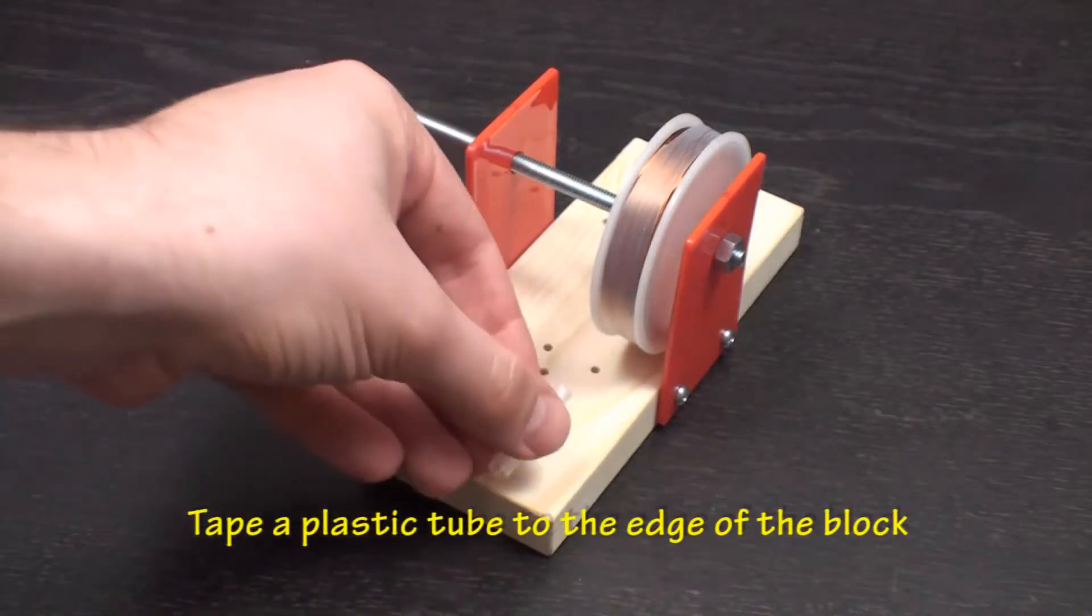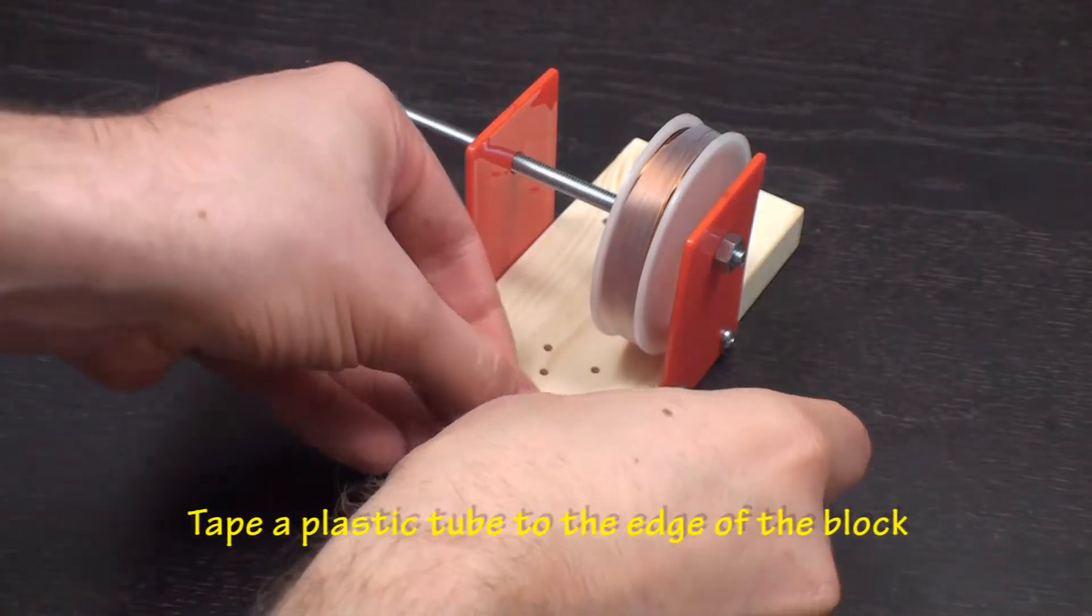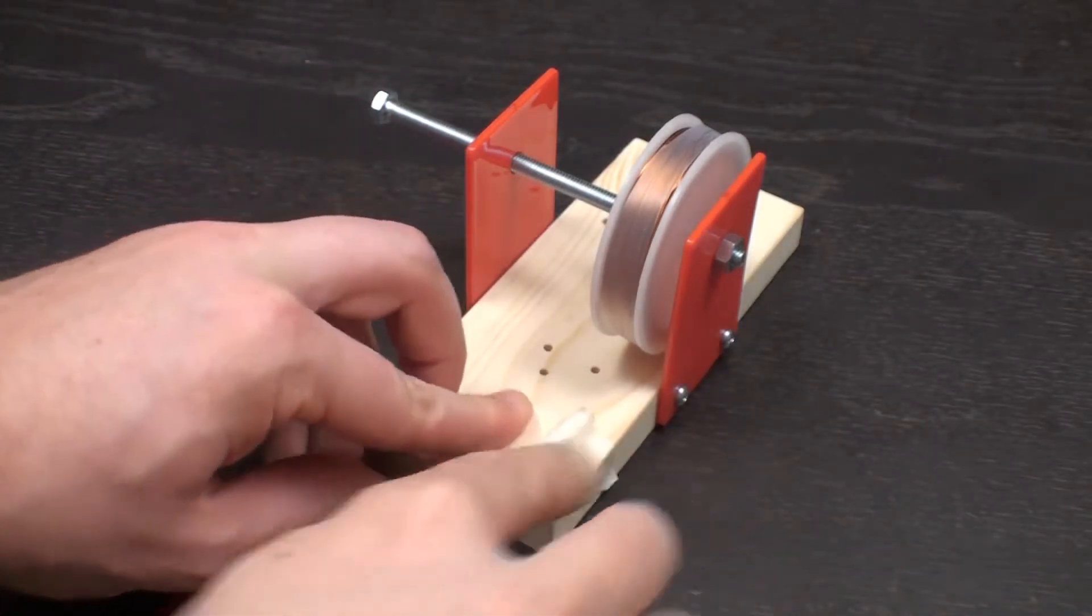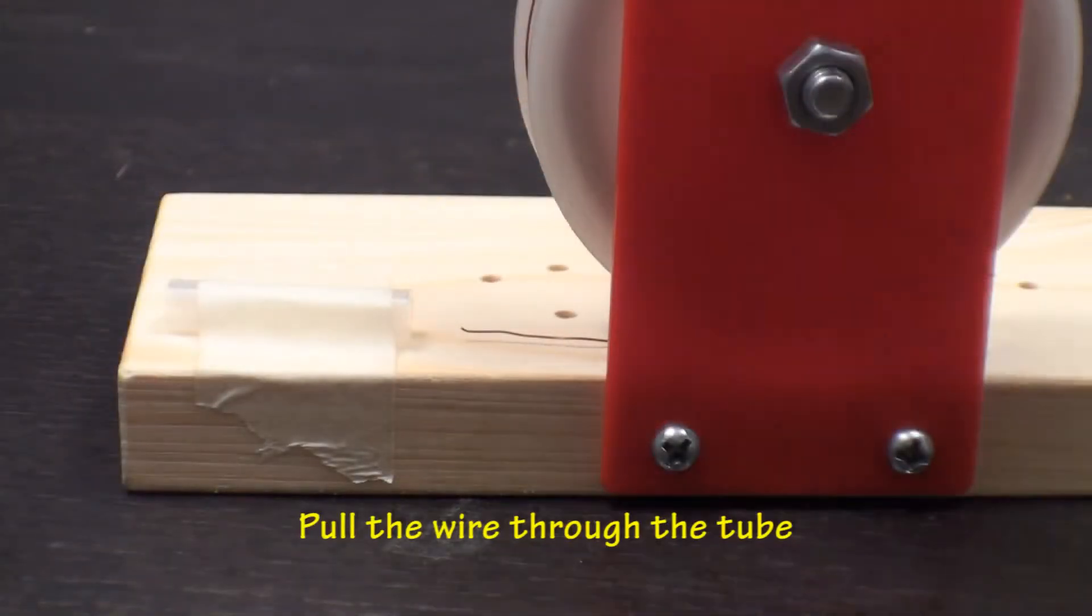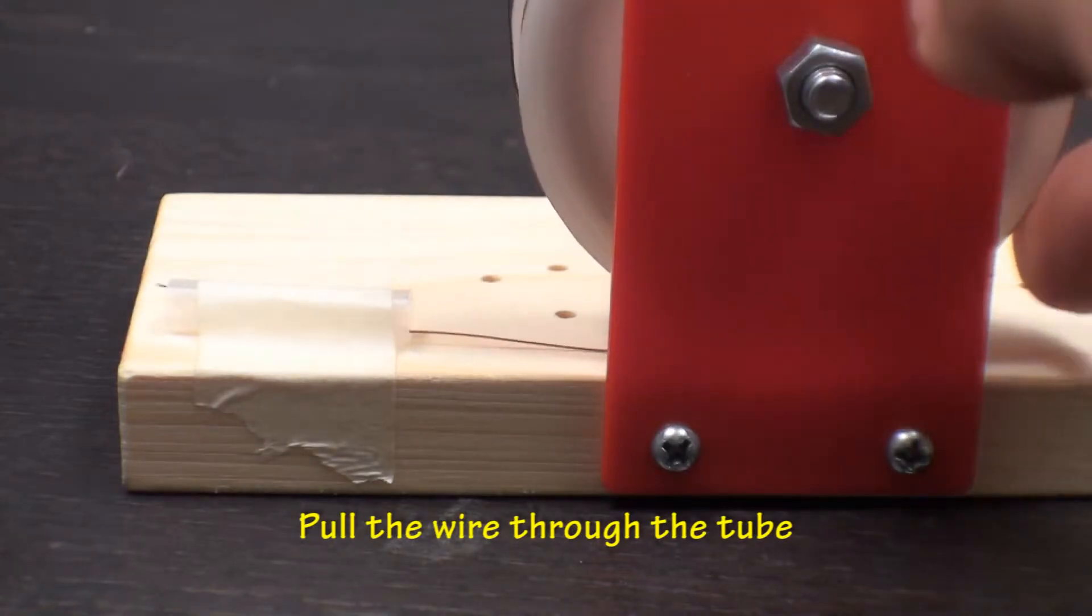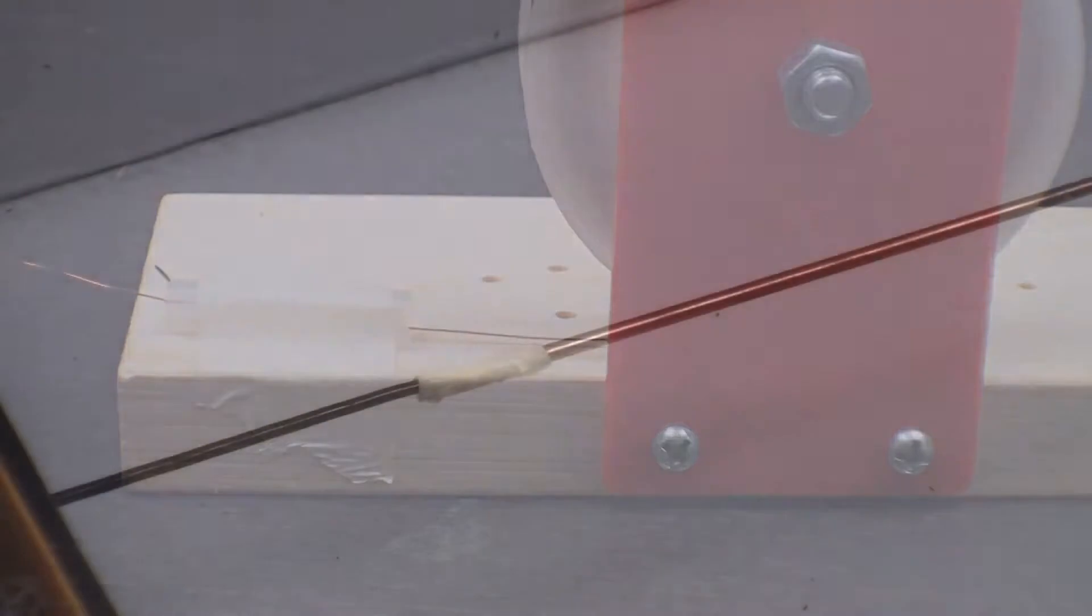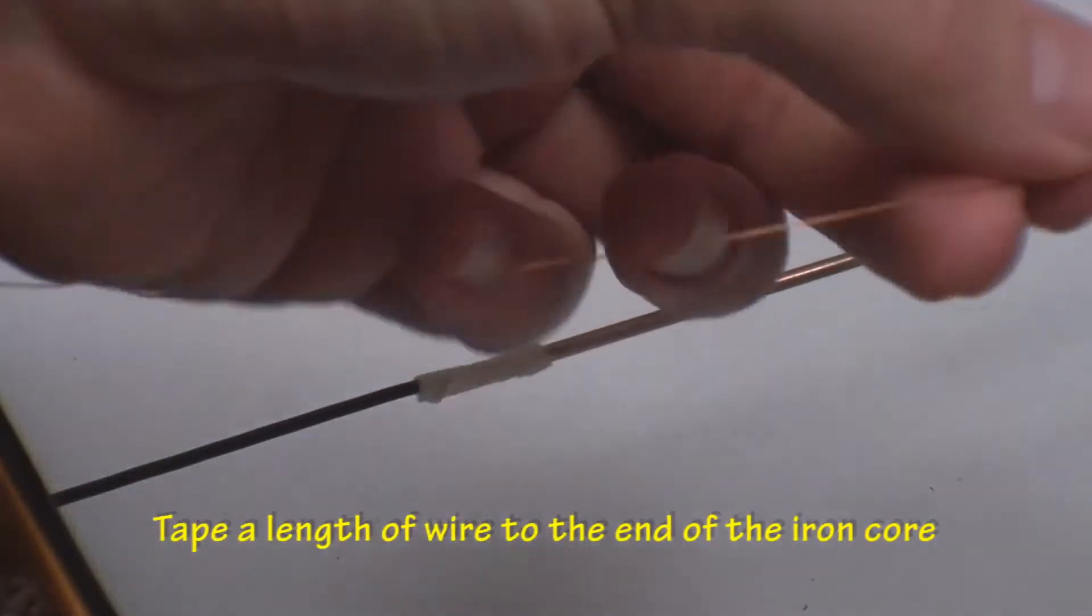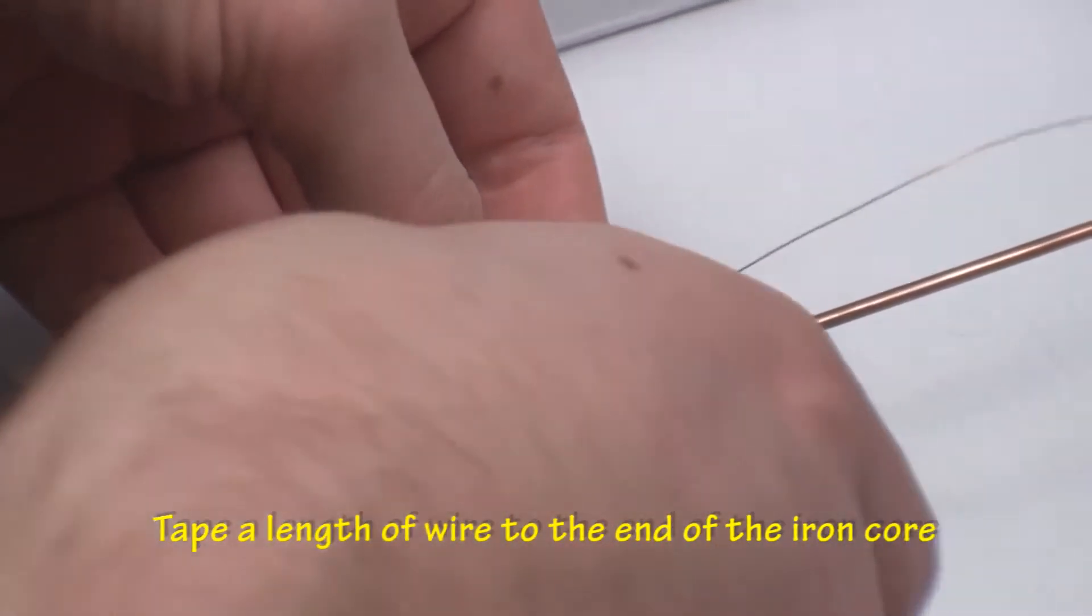Take a plastic tube and tape it to the end of the wooden block. Take the end of the magnetic wire and pull it through the plastic tube. Tape a length of wire to the end of the iron core on the winding mechanism. Make sure to leave about 6 inches of extra wire as a lead.